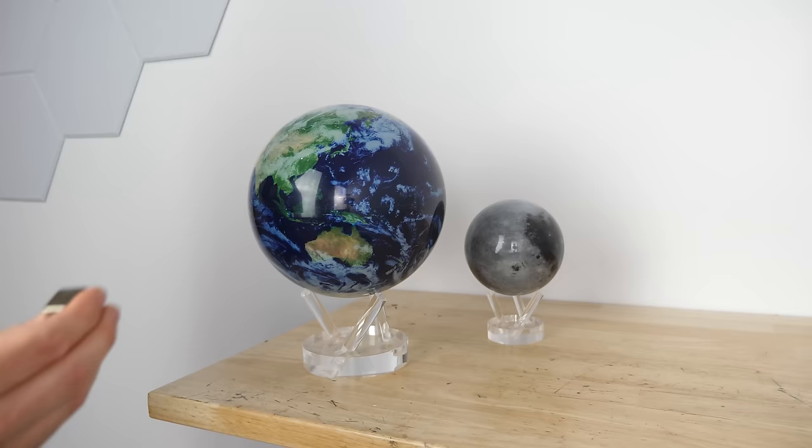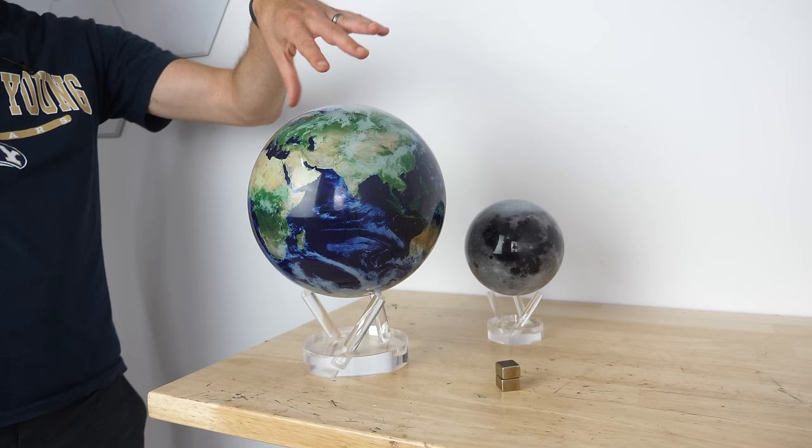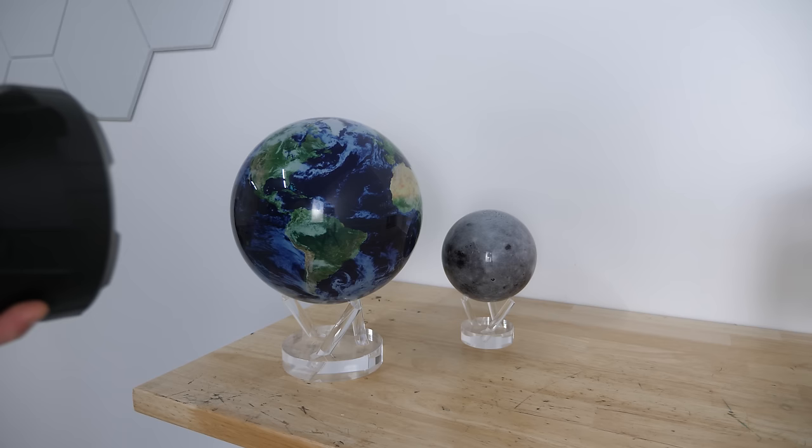But even if I just put this right here so it's disrupting the magnetic field of the earth, it should be able to anchor to this new magnetic field so the motor can still spin it around just fine. Okay, let's blast them with a hundred thousand lumens and see if it makes a difference. Three, two, one.